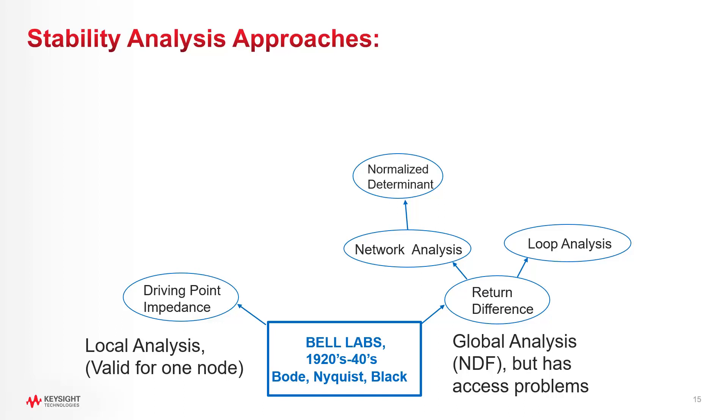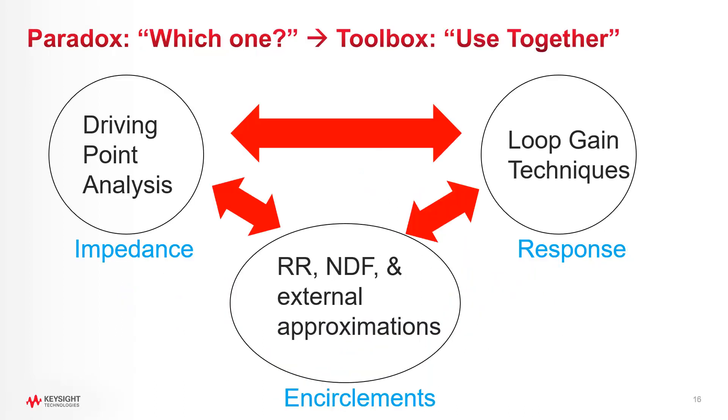So what I want to do now is turn this paradox of choice on technique around. Instead of thinking about what one technique you should use as a designer, perhaps it's better to use multiple techniques in a complementary fashion, because that gives you a different way of looking at the same problem. For example, NDF or return ratio lets you look at encirclements, knowing that you have a stable denominator. Driving point analysis lets you look at impedance as negative admittance, and loop gain lets you look at the network response due to the feedback. Now instead of a tangled web, this is starting to look a lot more like a toolbox.